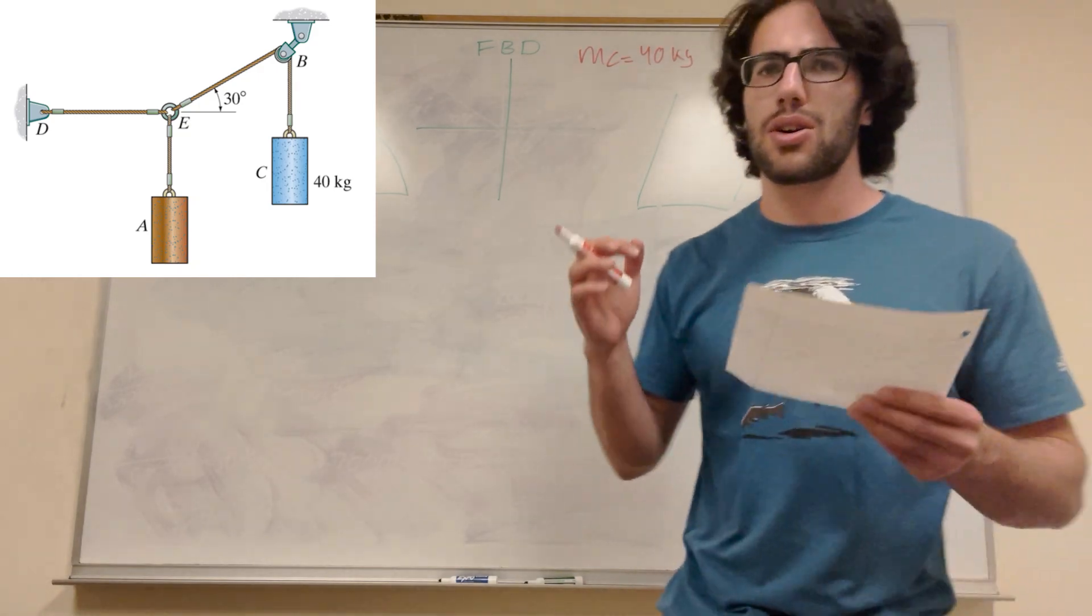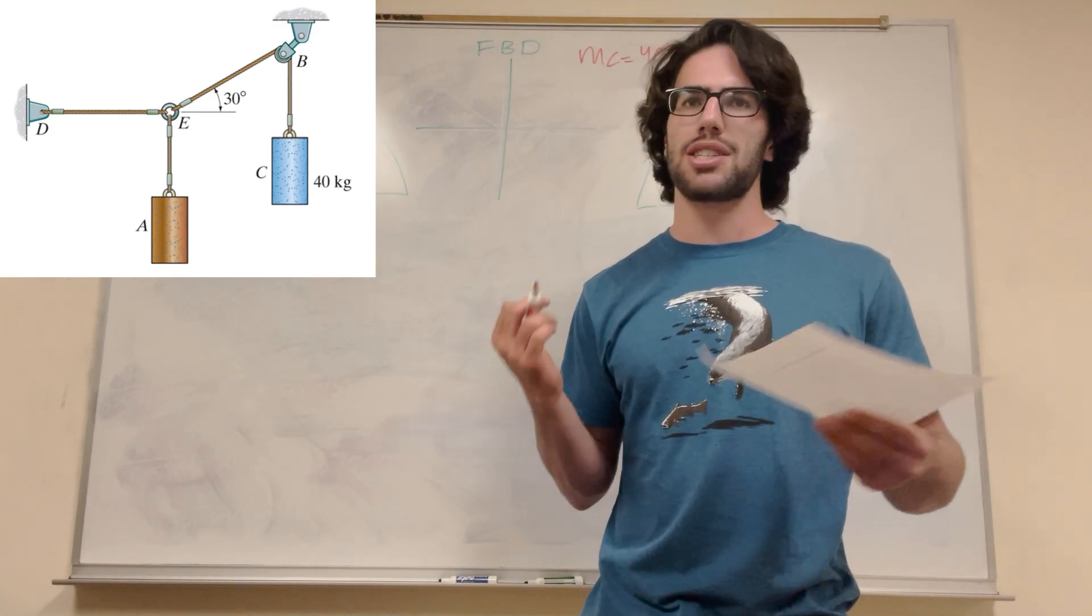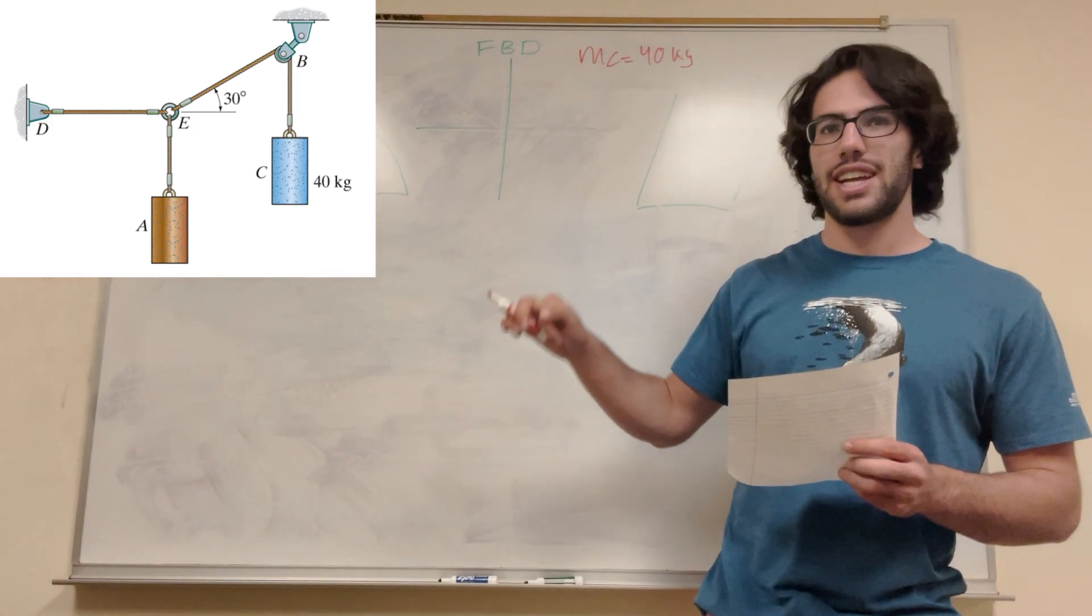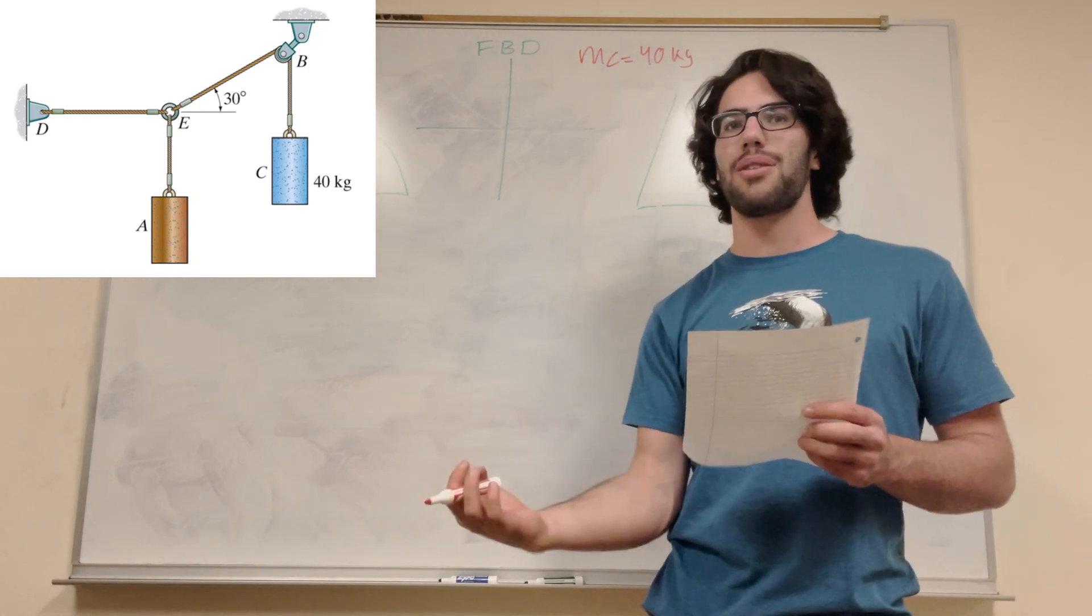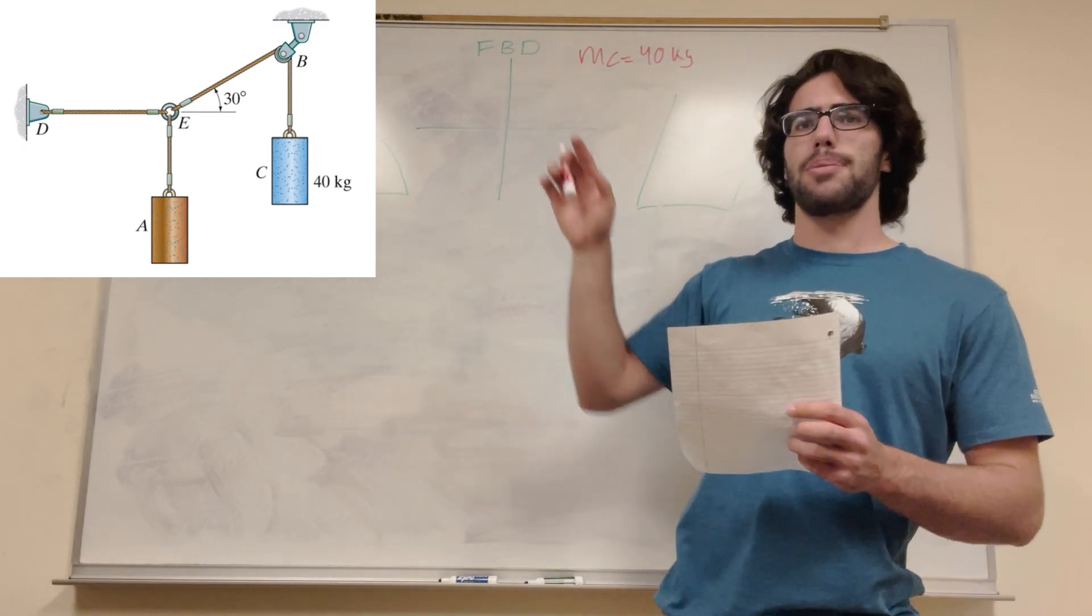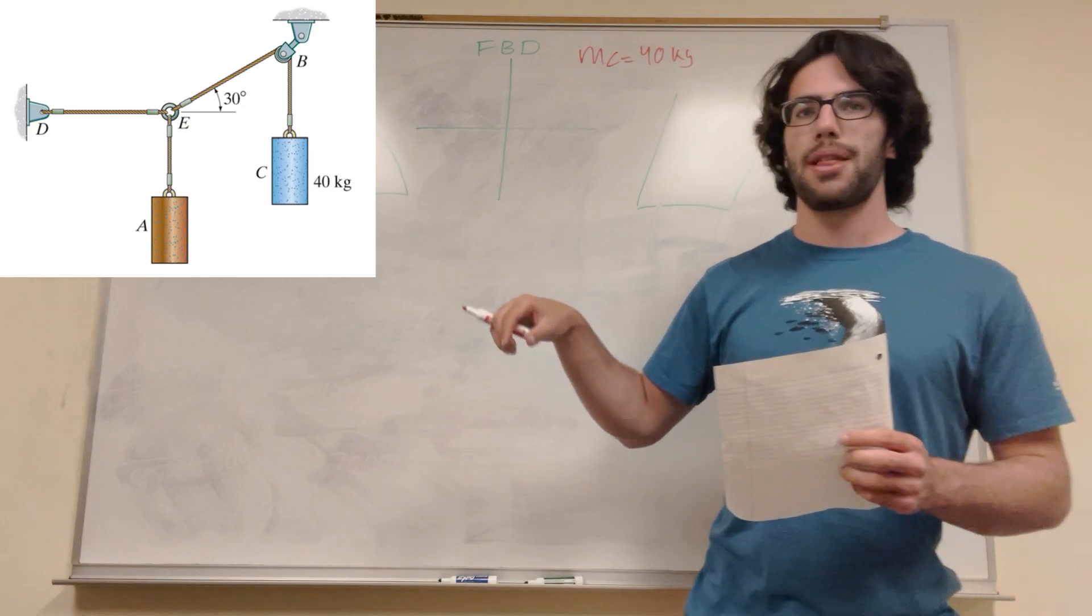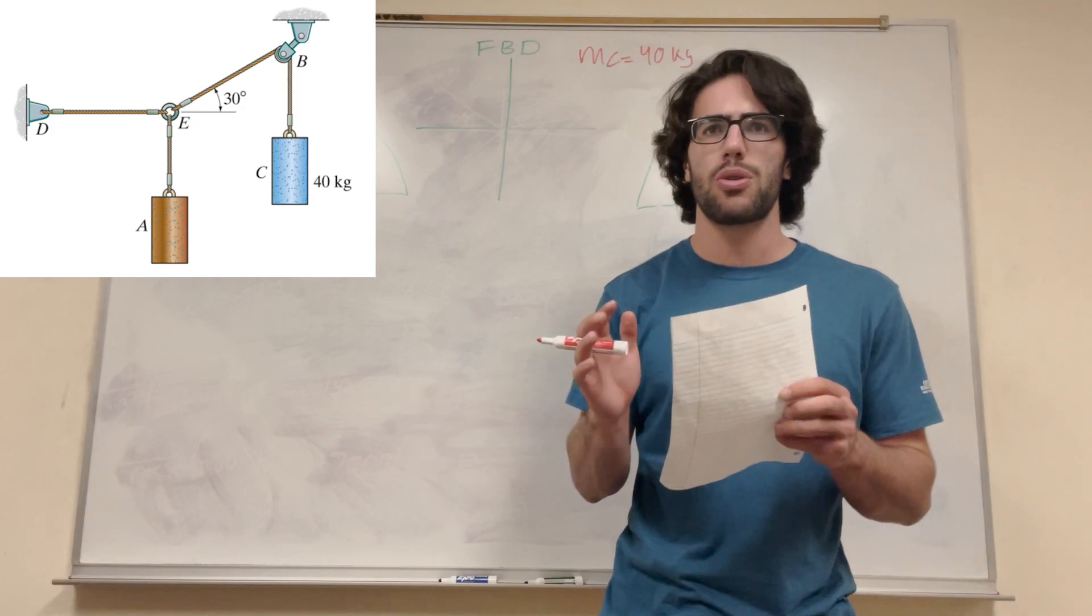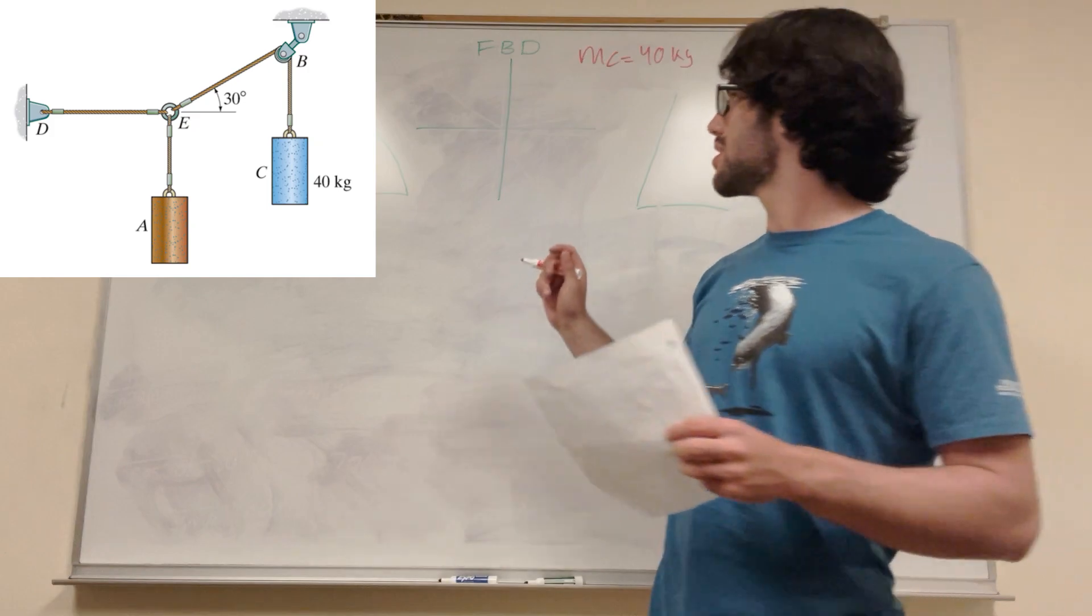So which point are we gonna pick? Our goal now is to draw a free body diagram. That's how you want to start these problems. Where are we gonna pick to be our center? Well, there's gonna be tension forces in each direction. There's gonna be the force pulling down from A, the force pulling left from D, and then there's the tension force from the pulley of C.